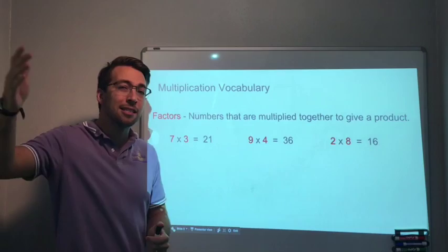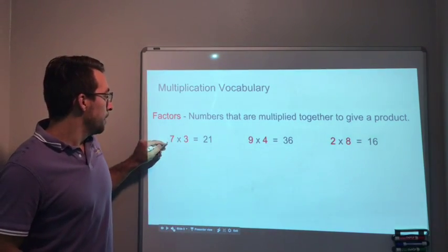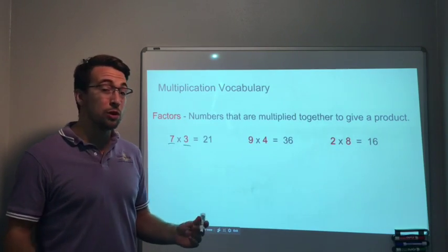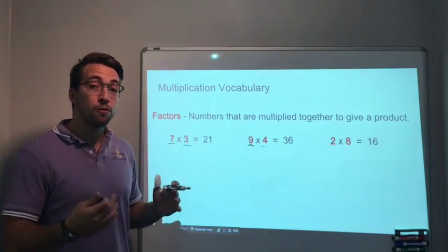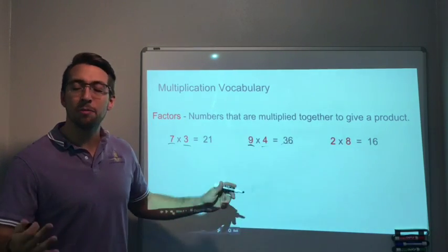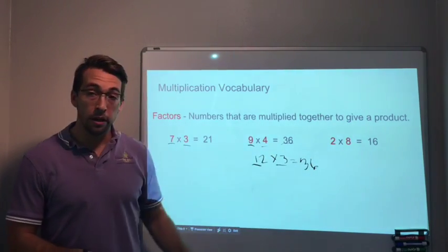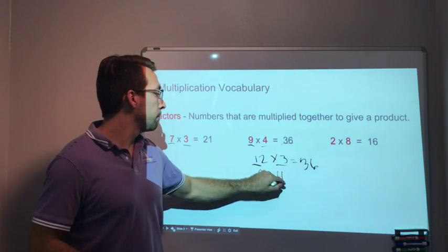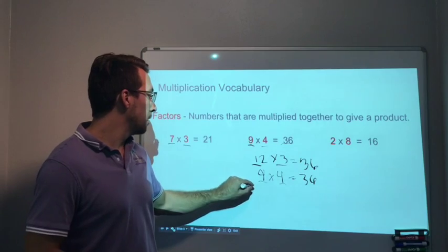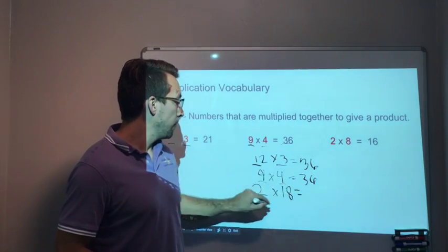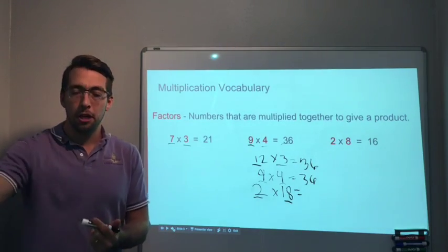Factors. What are factors? So product is the answer. Factors are numbers that are multiplied together to give a product. 7 × 3, they're both factors of 21. 9 × 4 is 36. So 9 and 4 are both factors of 36. Let's look at 36. There's many factors. 12 × 3 is 36. So 12 and 3, those are factors. 9 × 4 is 36. What about 2 × 18? Those are both factors. Factors are any numbers that you multiply together that can achieve a certain product.